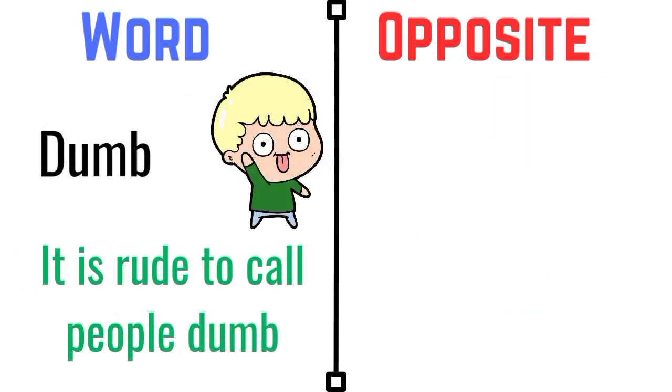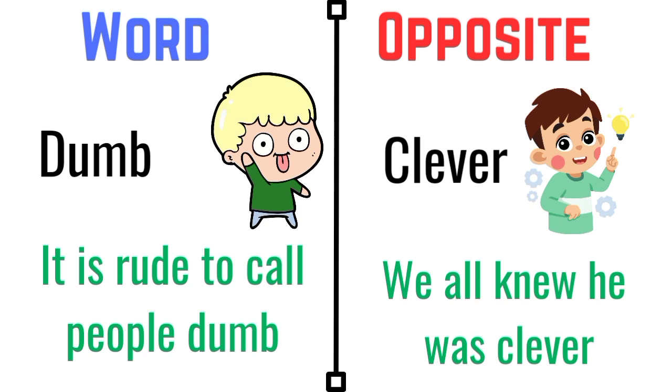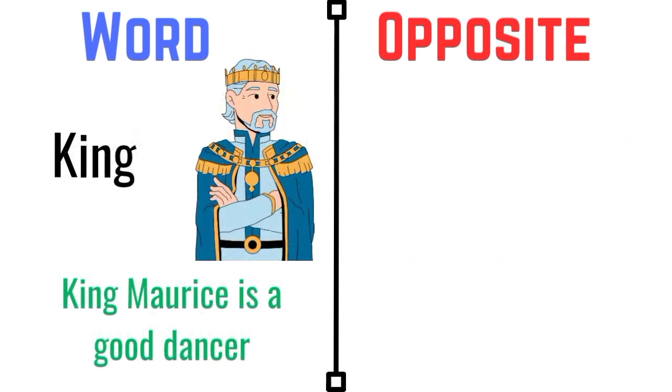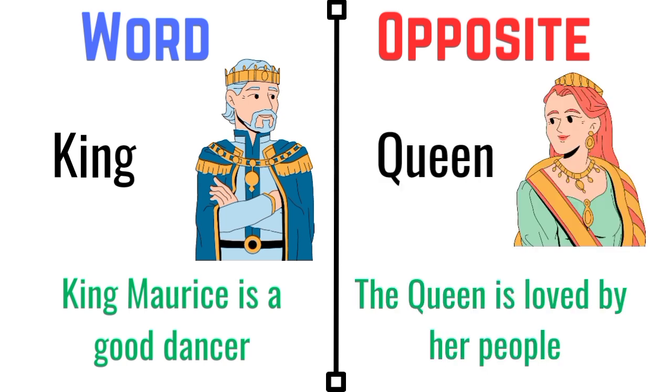Dumb. It is rude to call people dumb. The opposite of dumb is clever. We all knew he was clever. King. King Maurice is a good dancer. The opposite of king is queen. The queen is loved by her people.